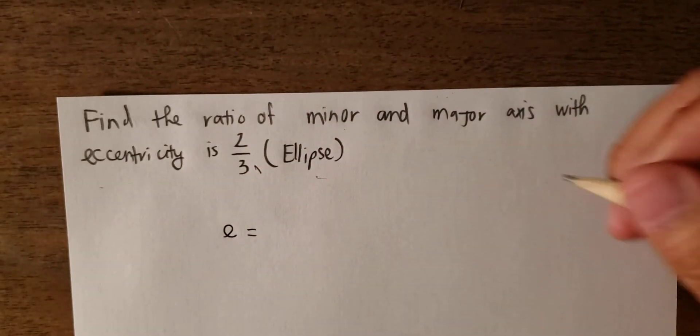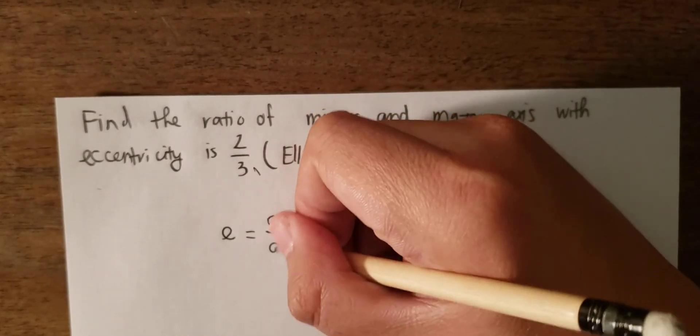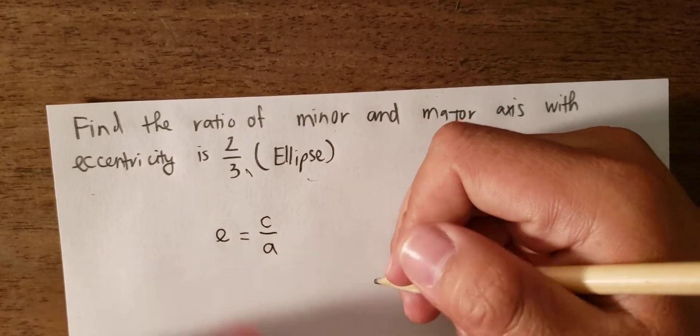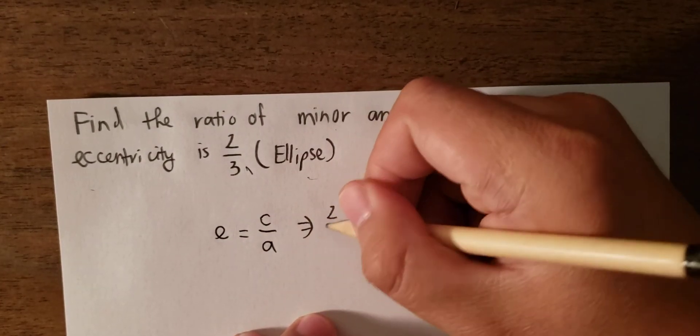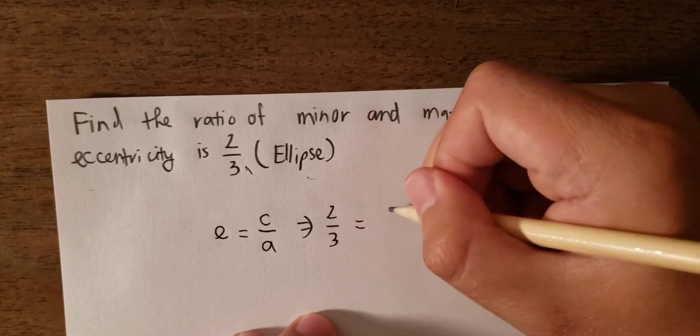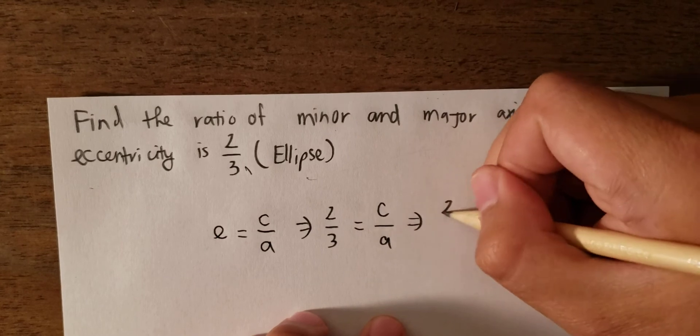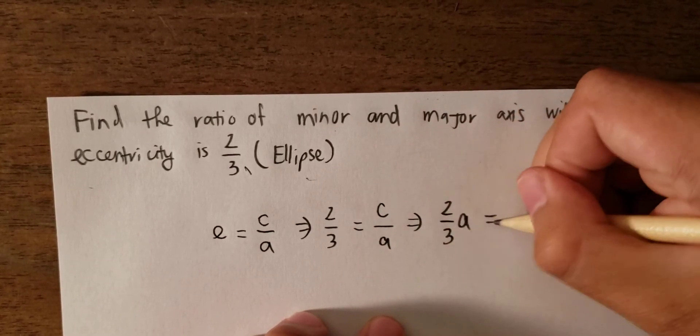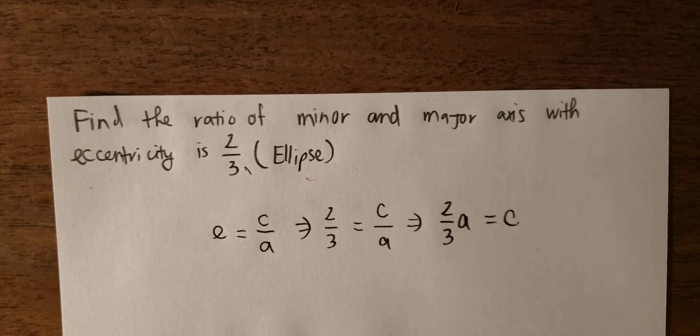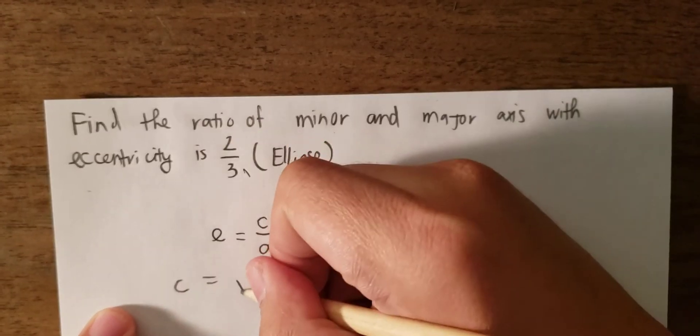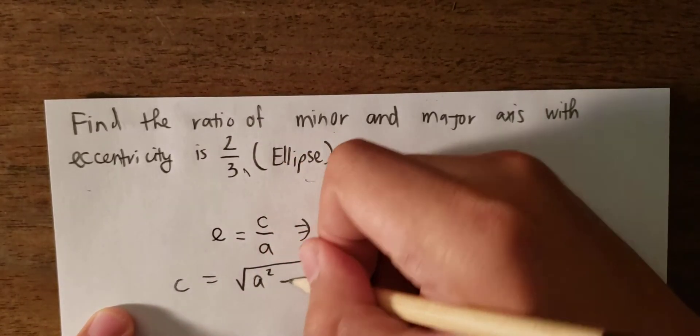So we have the formula e is equal to C divided by a. We put number 2 over 3 in e and we put a in here, that is the first step. The second one, we have C equal to square root of a power 2 minus b power 2. This is the formula.